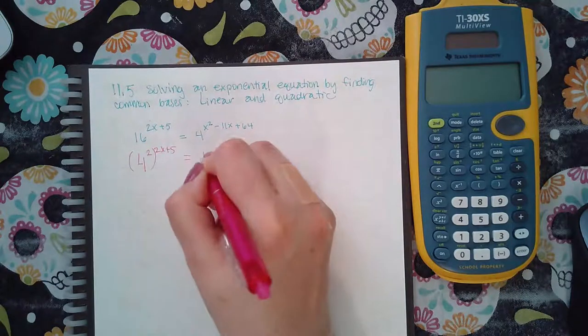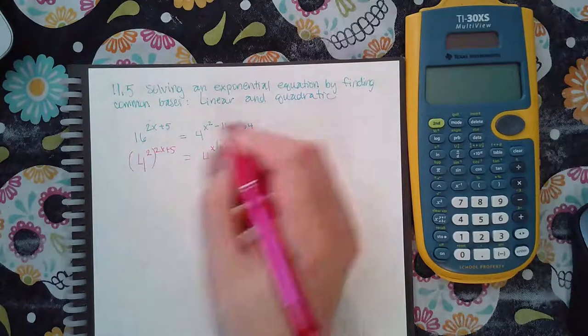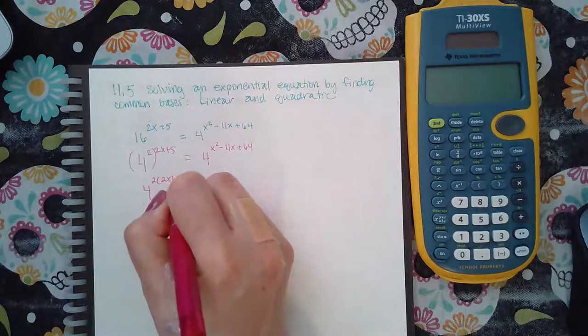And then when you have an exponent raised to another exponent, you have to multiply those exponents together. So 2 times 2x plus 5.